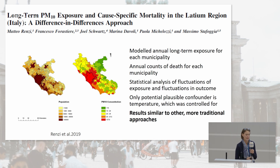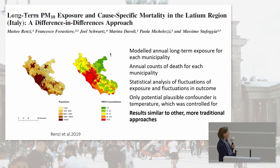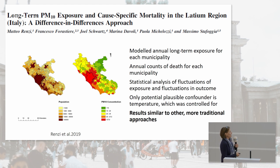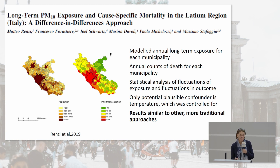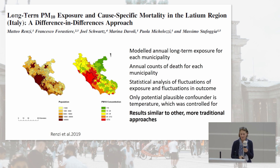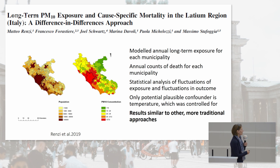A similar study was done in the Lazio region of Italy. They modeled long-term exposure for each municipality — including Rome and different districts within Rome — and looked at annual counts of deaths for each municipality. Very similar to the Medicare study, they conducted a statistical analysis of fluctuations in exposure and fluctuations in outcome. The only possible confounder — temperature — was controlled for in the analysis phase. Their results matched those of a traditional epidemiological analysis very closely.